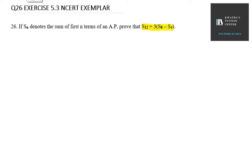First of all, we have the Sn formula. Sn equals n over 2 in bracket 2a plus n minus 1d. This is the formula for Sn.